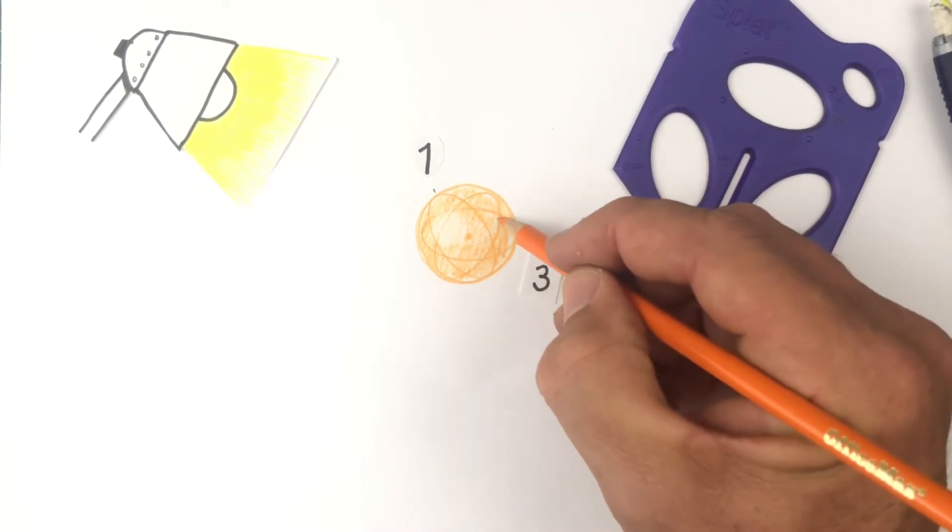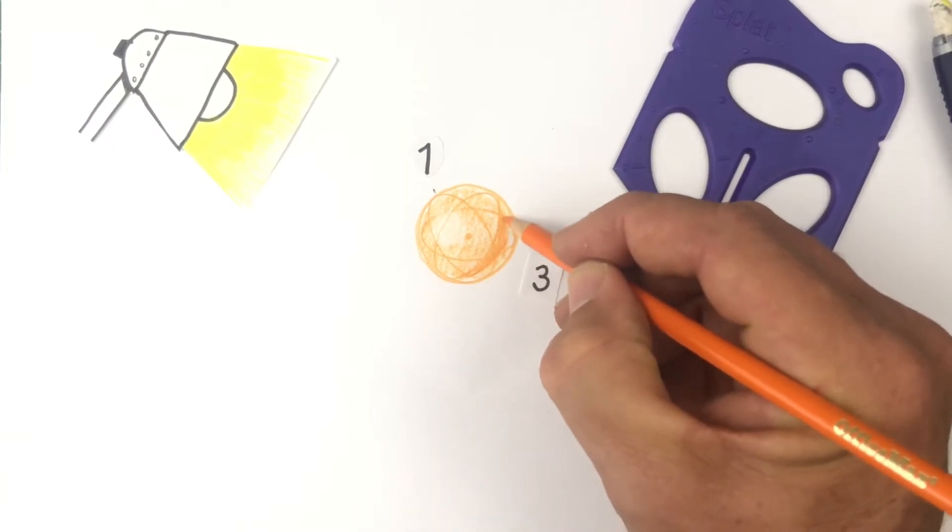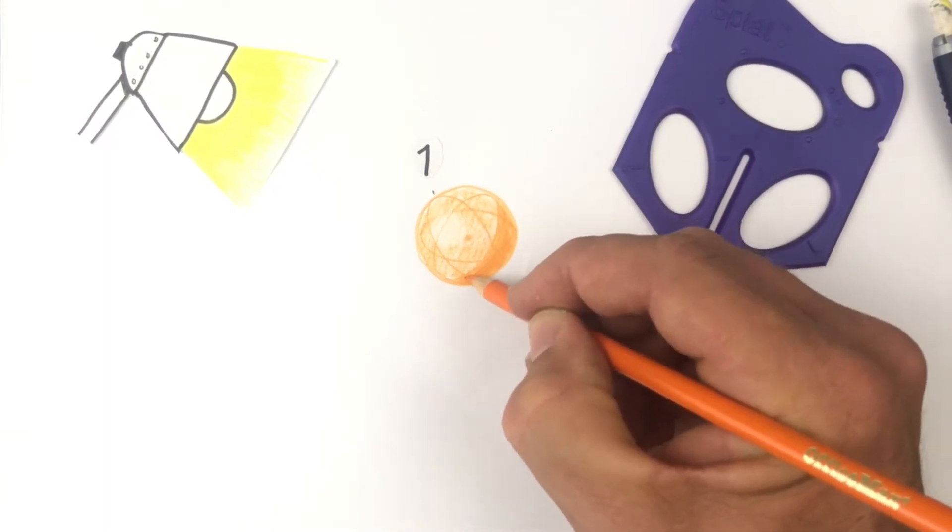That line that we drew with the splat is kind of the shadow line. Behind that, I'm adding my number three. So we haven't used number two yet.